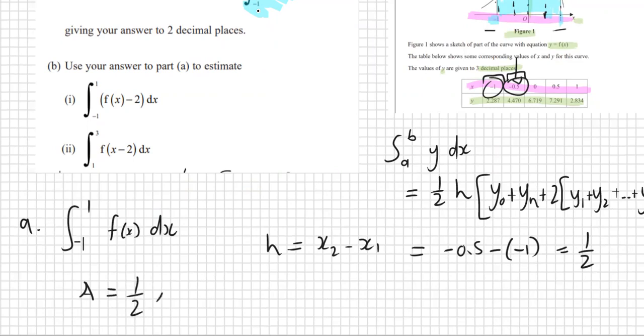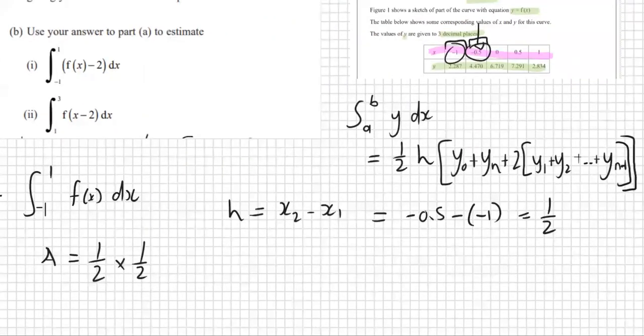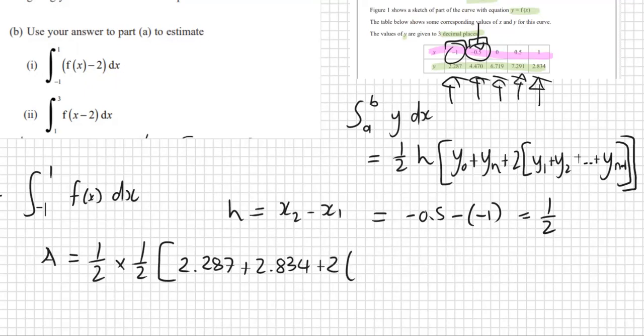Area equals a half times the height, which was a half that we worked out. And we sub in all our values. Their y values are over here. So the first 2.287 is y0, and then the last y is 2.834. And then we do all the y's in the middle: 4.470 plus 6.719 plus 7.291. Close that bracket, close the big bracket. This all goes in the calculator straight away.